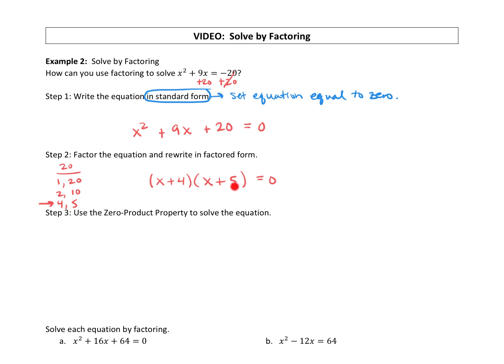Now that we have factored form, we can use the 0 product property to solve the equation. So we just take each factor and set it equal to 0. These are just nice little one-step equations. We're going to subtract 4, so x is a negative 4. We'll subtract 5, and x is also a negative 5.